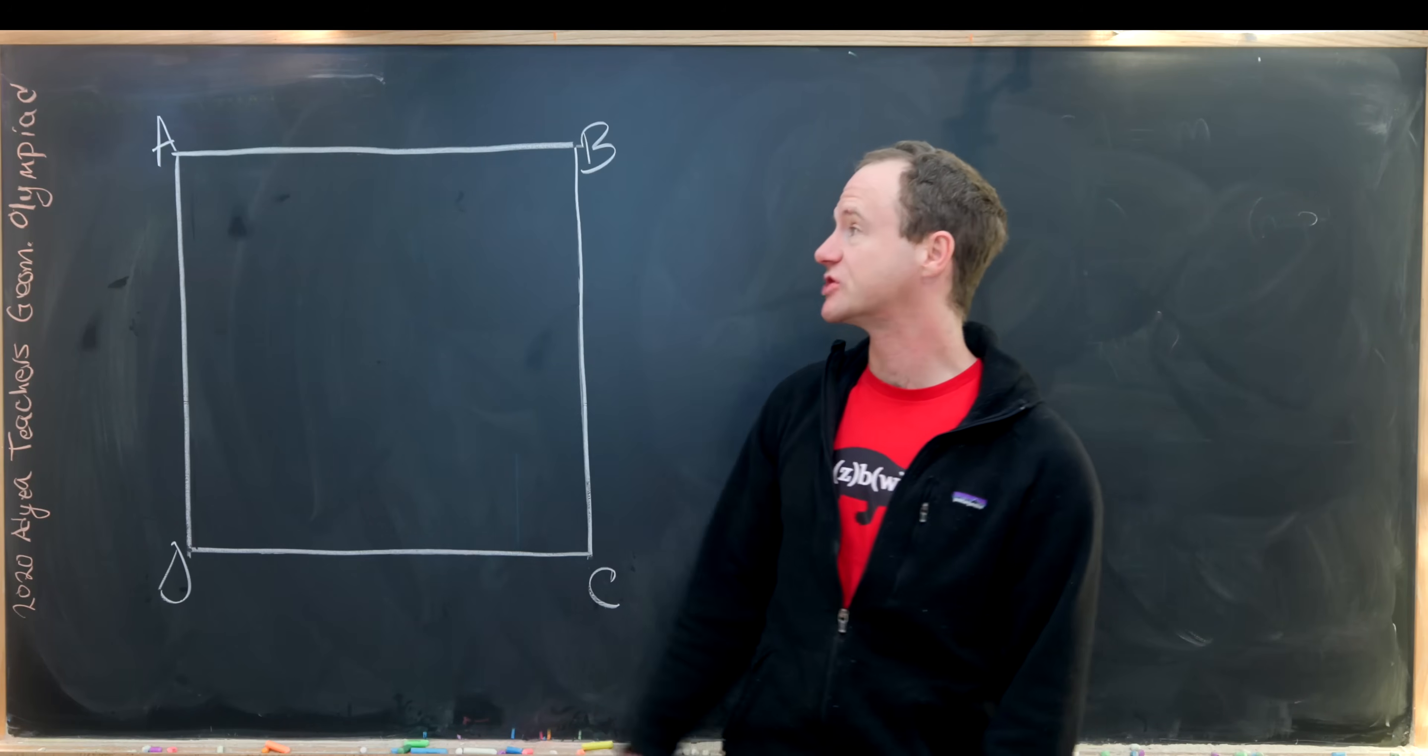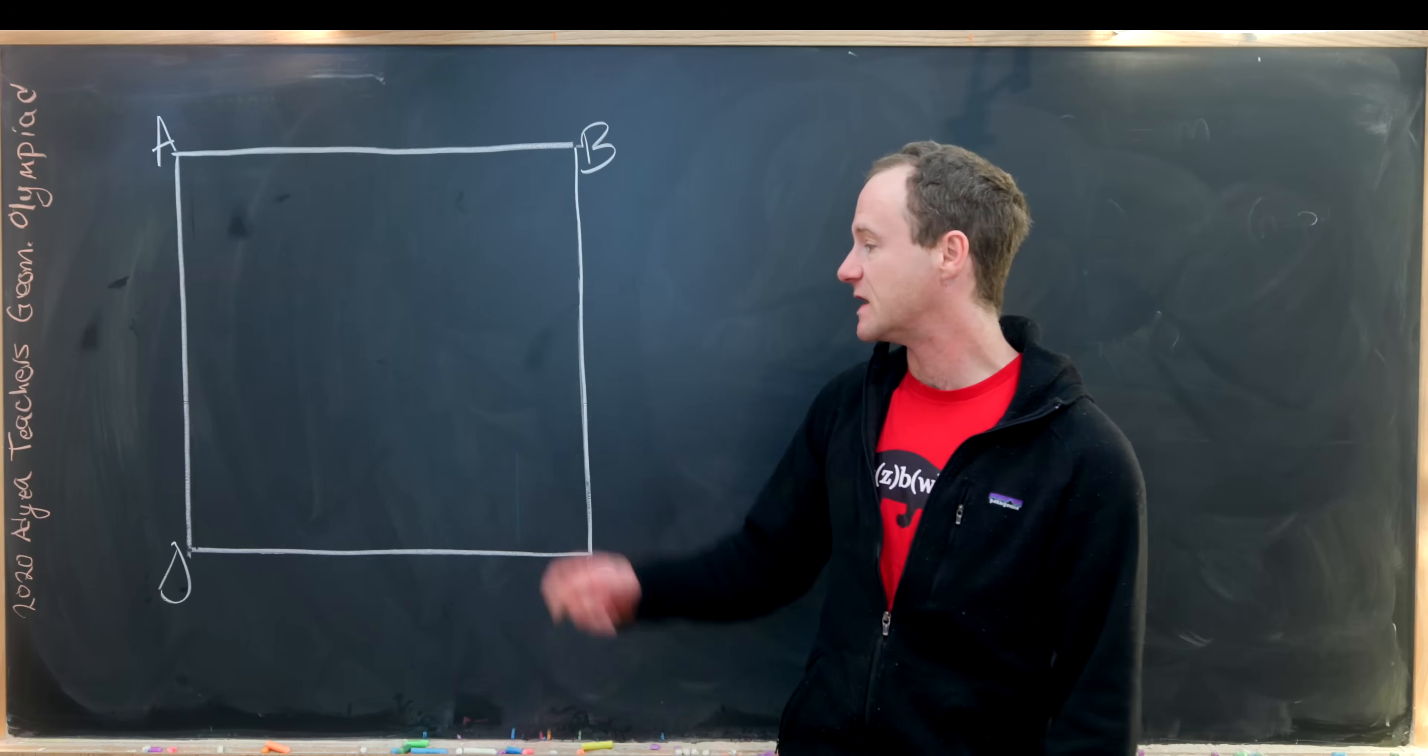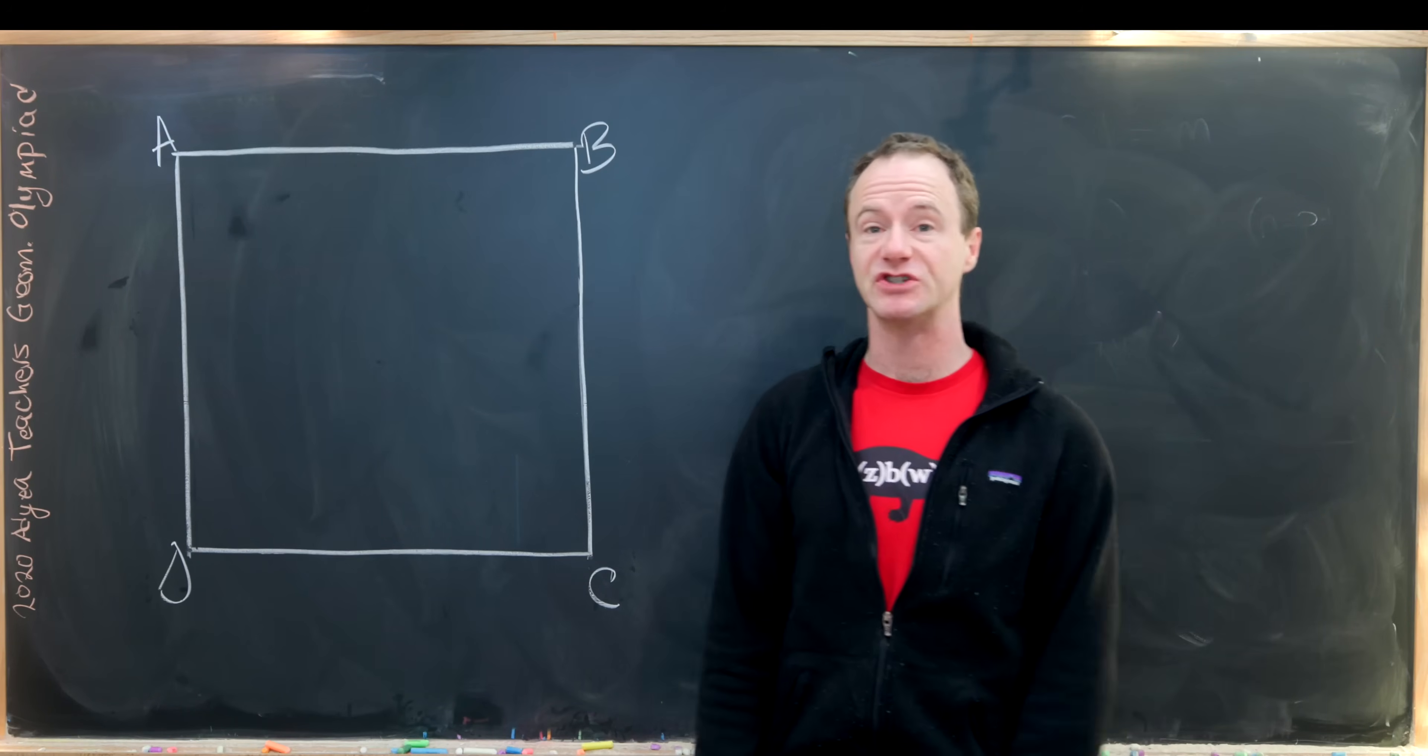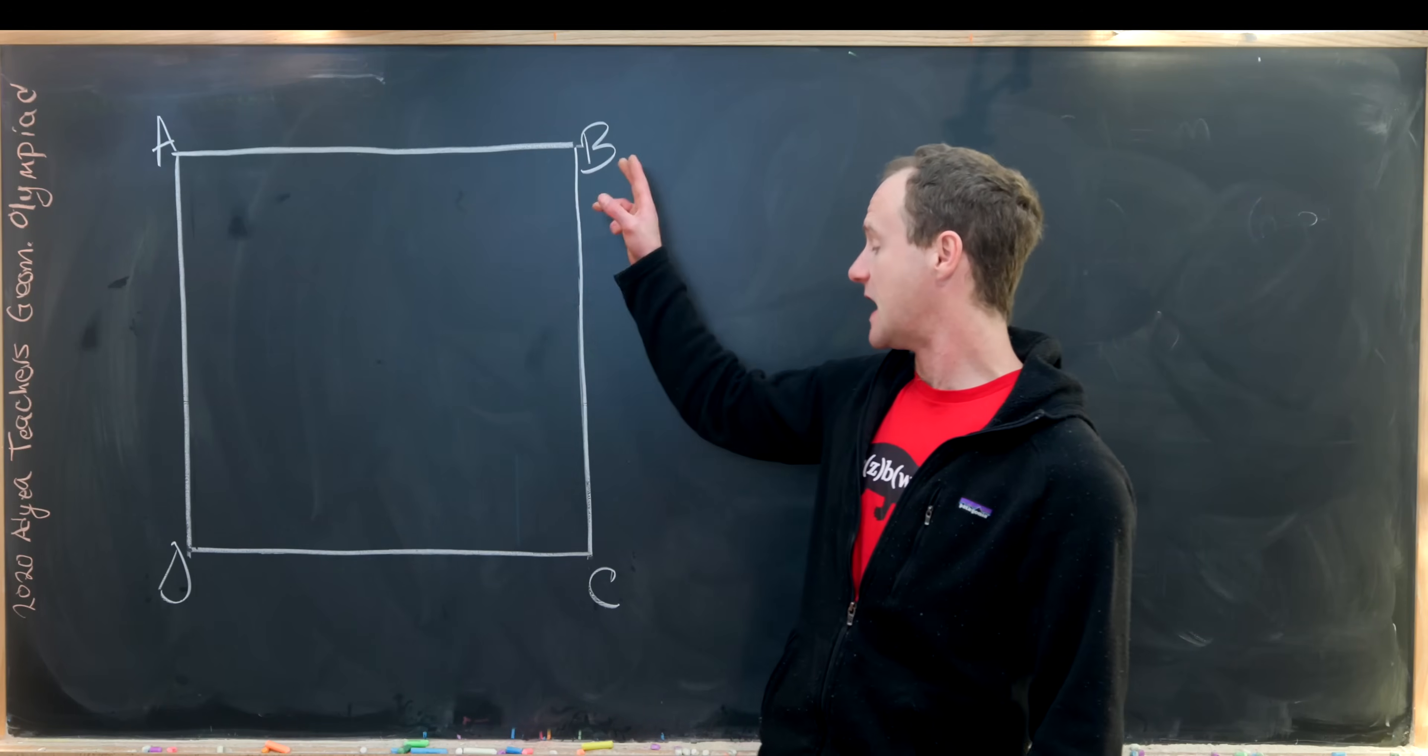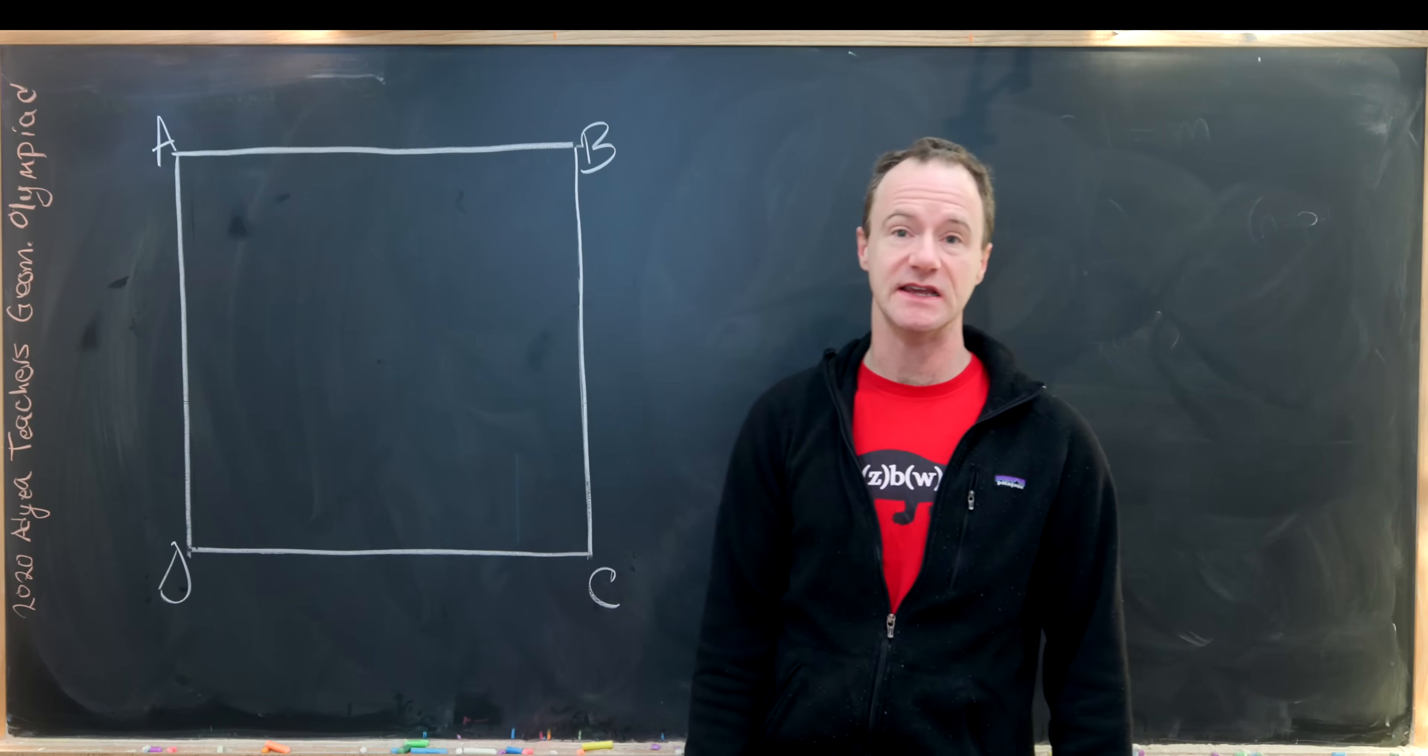Here I've got a nice problem from a teacher's geometry Olympiad from the year 2020 from a region in Russia. So we'll start with the square which I've labeled A, B, C, D.